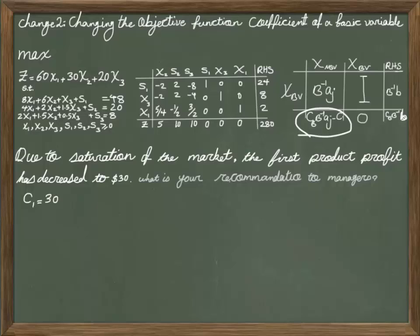I'm going to recalculate Cb B inverse Aj minus Cj, because I'm changing the coefficient of a basic variable. This is the matrix Cb that we previously introduced, but instead of 60, I put 60 plus delta.